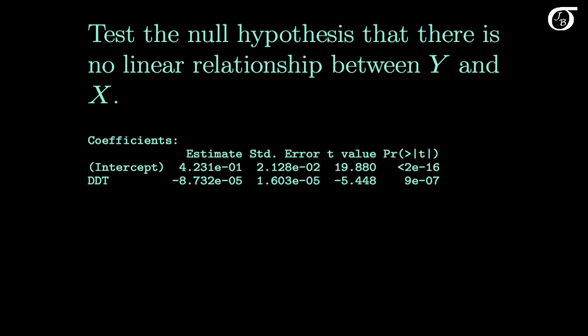A natural test to carry out is of the null hypothesis that there is no linear relationship between y and x. In symbols we're testing the null hypothesis that the true slope beta 1 is equal to 0. And this simply means that there is no linear relationship between eggshell thickness and DDT concentration.